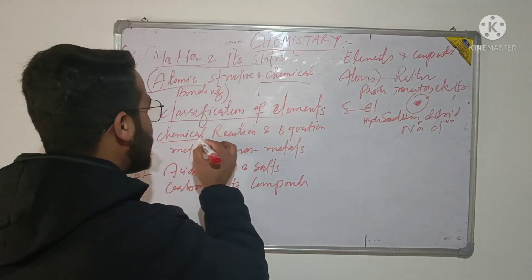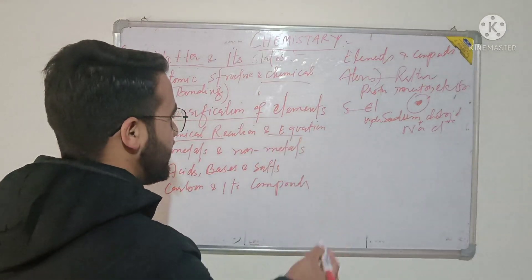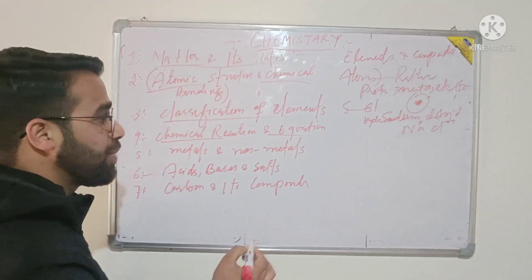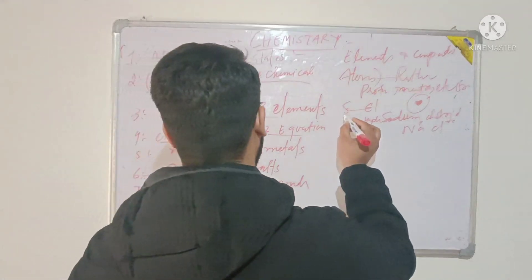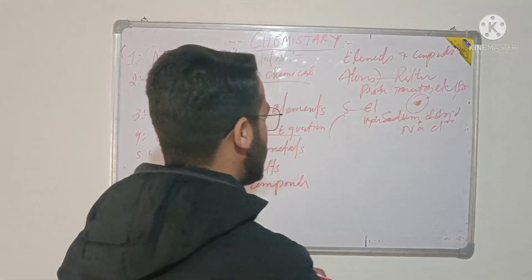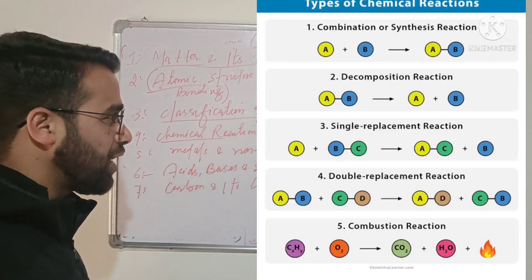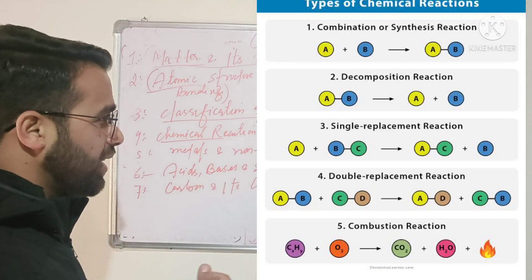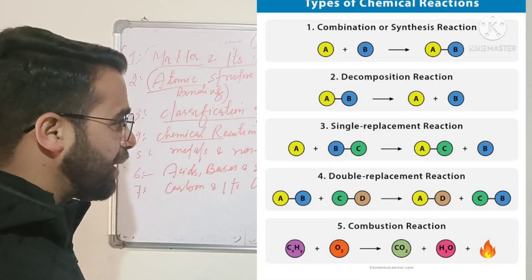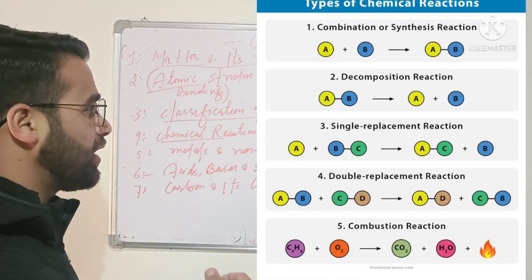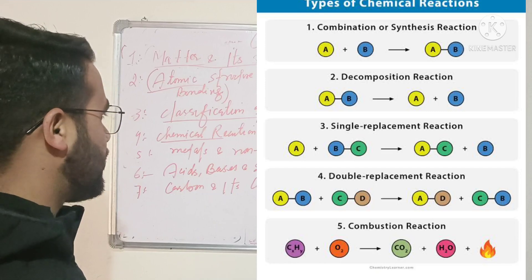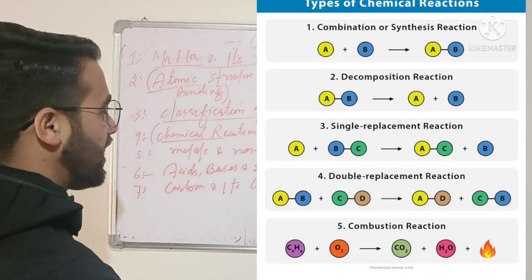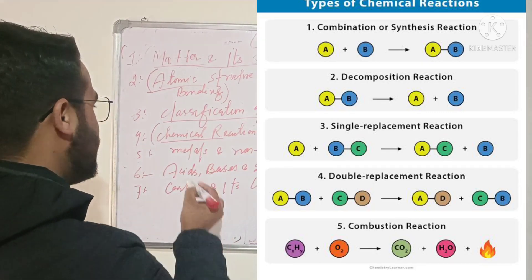Then you have chemical reactions and equations. In this chapter, you will study different types of chemical reactions, such as combination reactions, displacement reactions, and double displacement reactions. You will study how to write and balance chemical reaction equations.